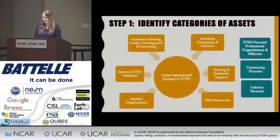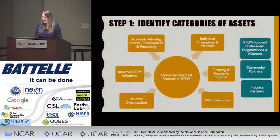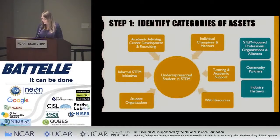So what do I mean by assets? The first step in asset mapping is to start thinking broadly. We have categories to help people start inventorying what assets exist in their institution and their broader environment, because industry partners and community partners are part of that too. These categories have been developed for STEM, but as we engage more in data science and environmental science, those categories will continue to broaden.